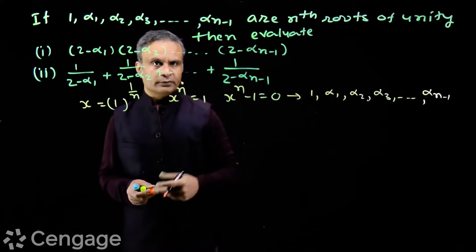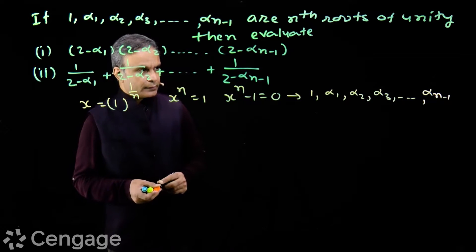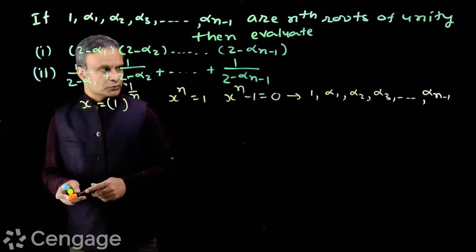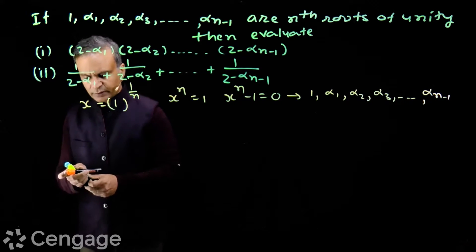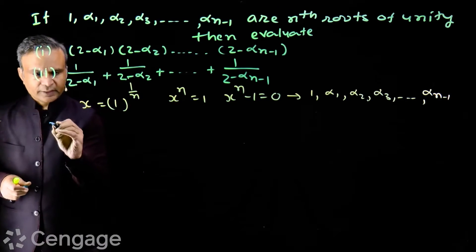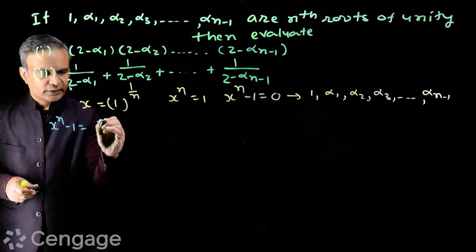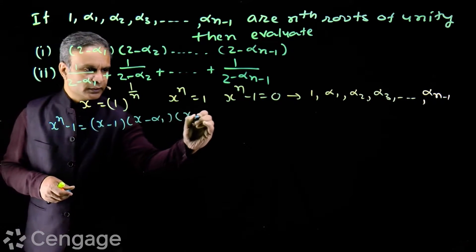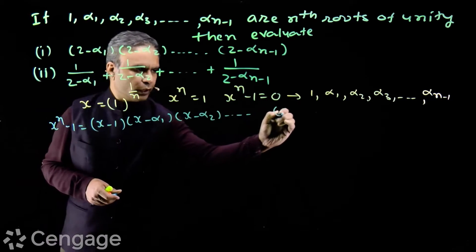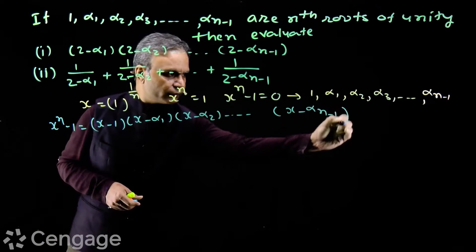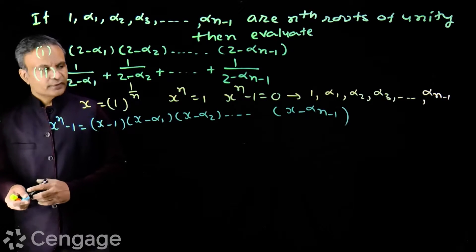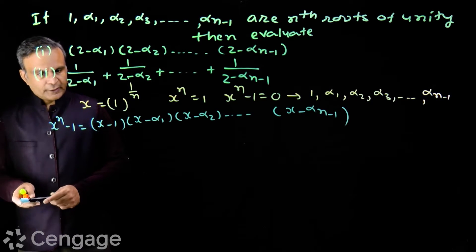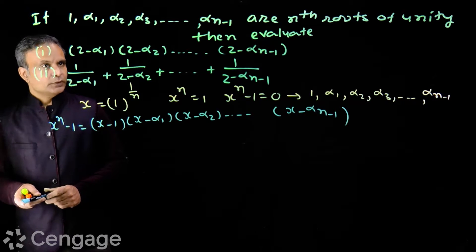Since 1, α₁, α₂, ..., αₙ₋₁ are roots of x^n - 1 = 0, using the factor theorem we can write x^n - 1 as (x - 1)(x - α₁)(x - α₂)...(x - αₙ₋₁).